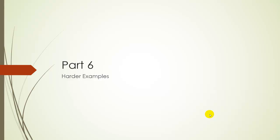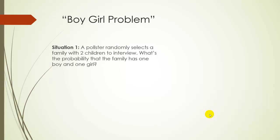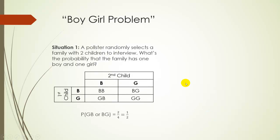For part six, let's explore some harder examples of probability. This is a classic problem called the boy-girl problem. Let's say a pollster randomly selects a family with two children to interview. What's the probability that the family has one boy and one girl? Well, one way to illustrate this is the first child could either be a boy or girl, the second child could either be a boy or girl. So there's four possible options.